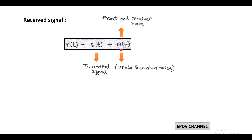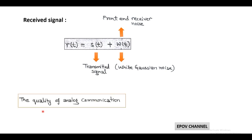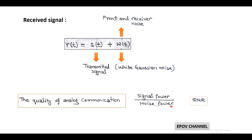Now in order to find the quality or performance in analog communication, the first step is to determine the signal to noise ratio, or simply written as SNR. Here SNR is the ratio of signal power to noise power.